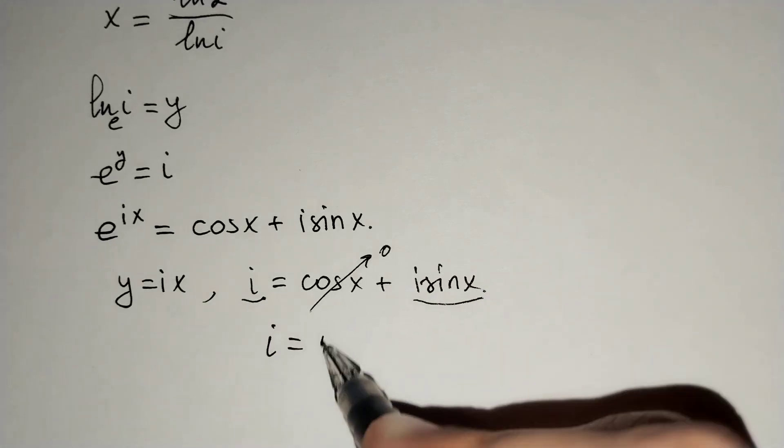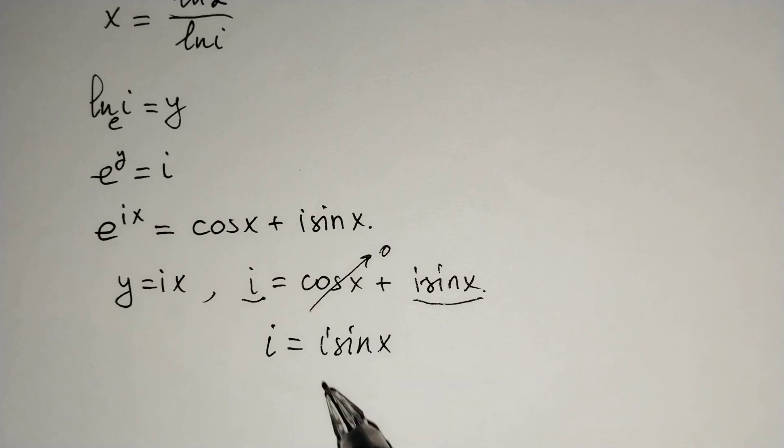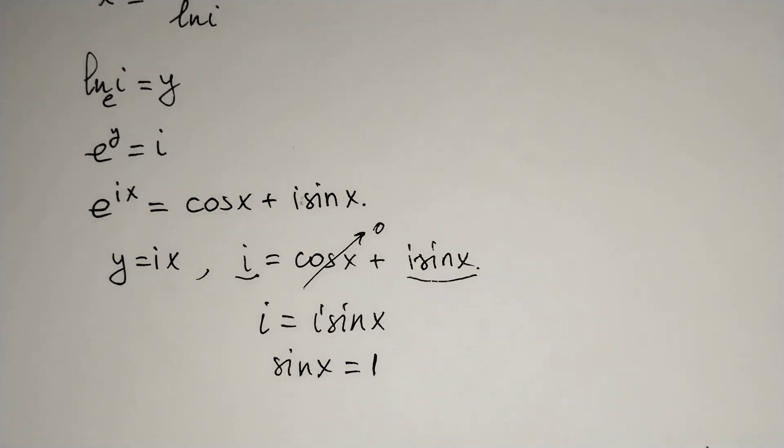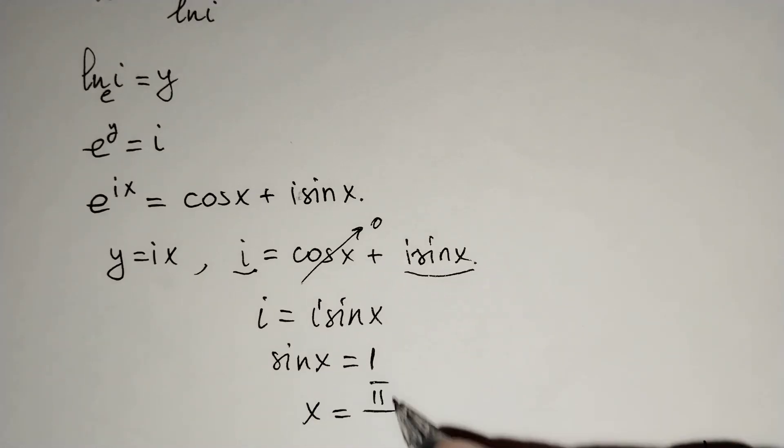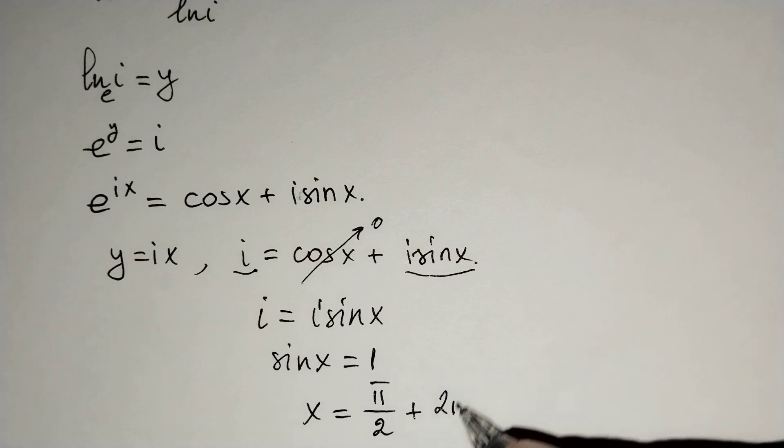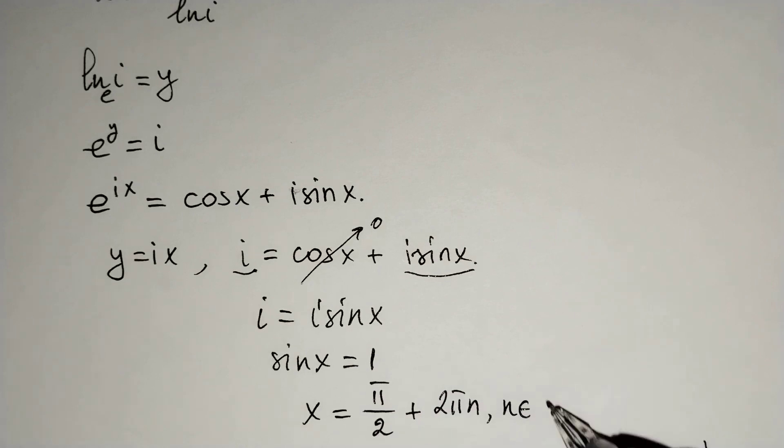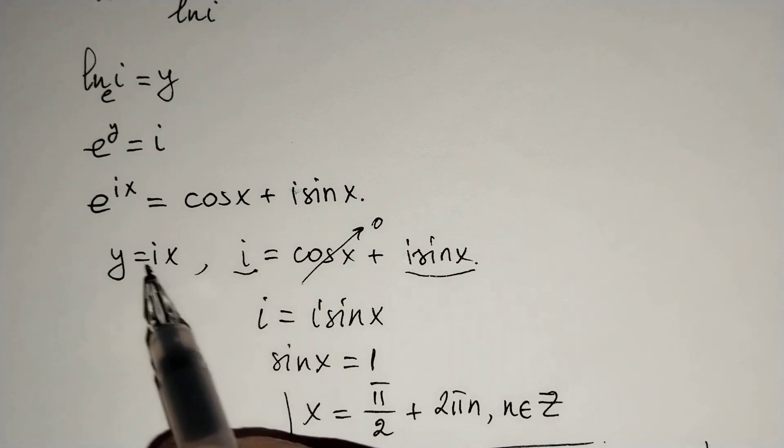i equals i sine x, and sine x equals 1. If we find x from this equation, x equals pi over 2 plus 2 pi n where n belongs to integers. And we should find y